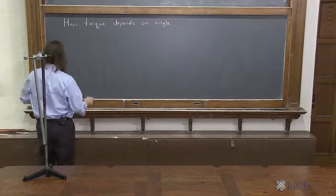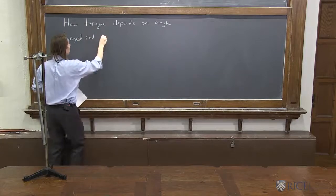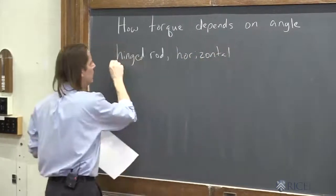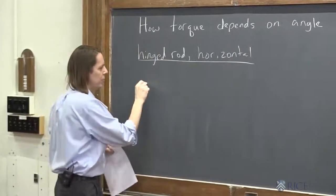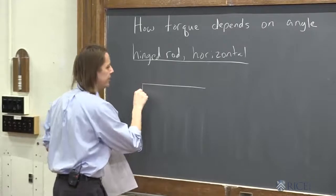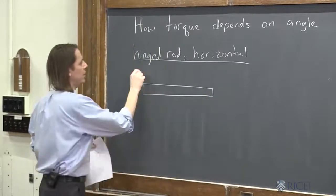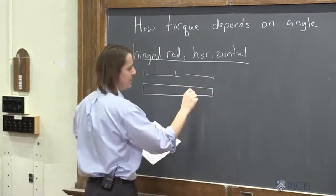So let's do hinged rod horizontal. If we're going to draw it, it's a horizontal rod like that. And we're going to say all the rods have length L and mass M, which I can just write there.